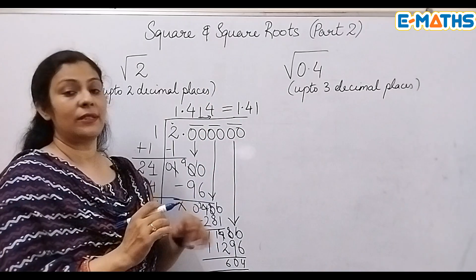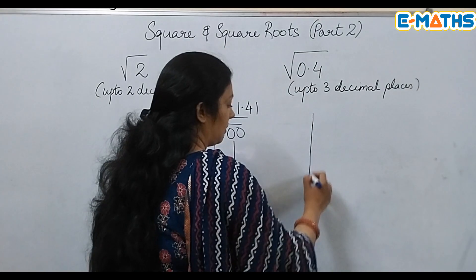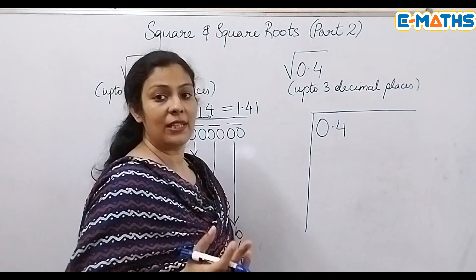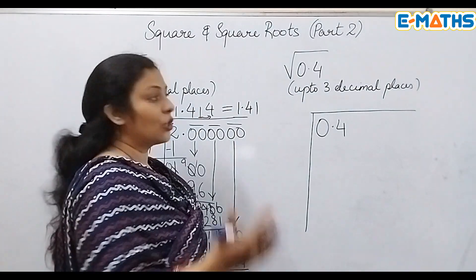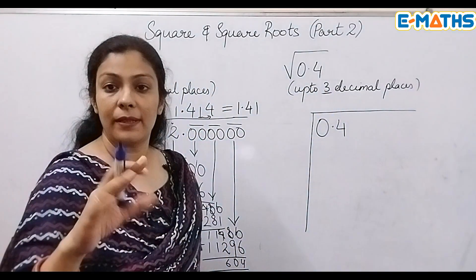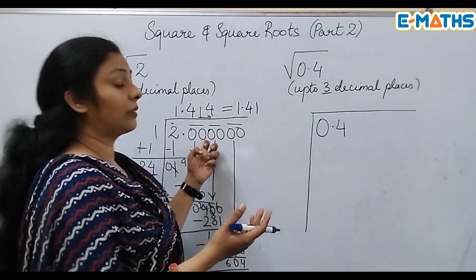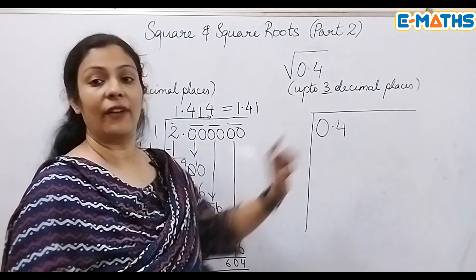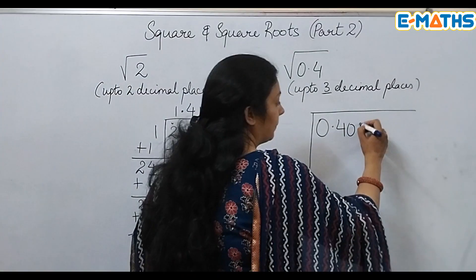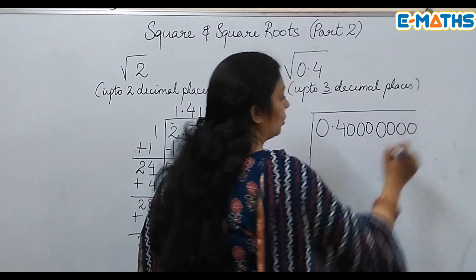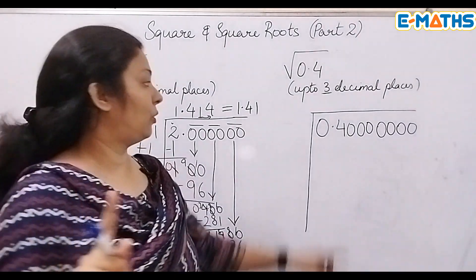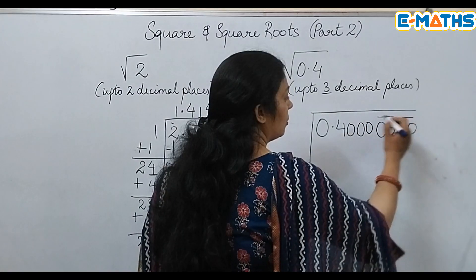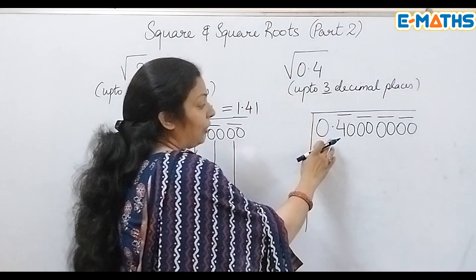Now moving on to the next question: I have a decimal number, 0.4, which already has one digit after the decimal. Since I want my answer up to three decimal places, I need to take four pairs of decimal places total. If the question asks up to two decimal places, take three pairs; up to three decimal places, take four pairs. So here we get four pairs: one, two, three, and four.